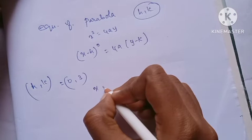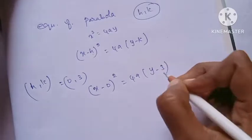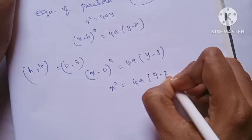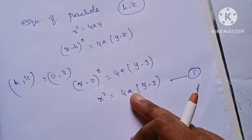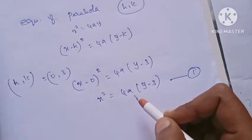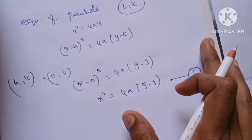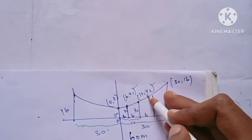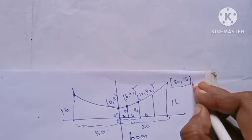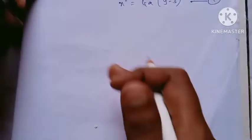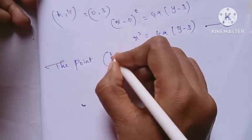We substitute h and k into the equation. So x minus 0 whole square equals 4a into y minus 3, giving us x squared equals 4a into y minus 3. Now we use the point (30, 16) to find the value of a.